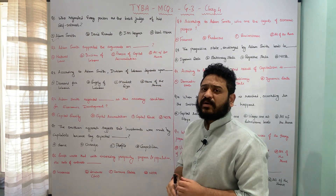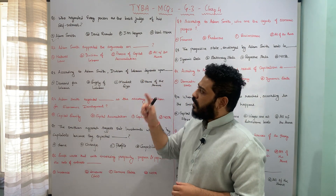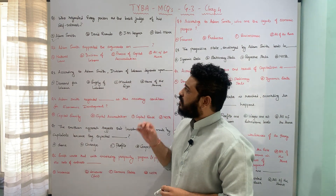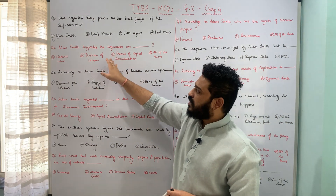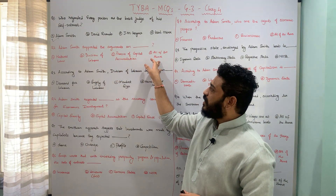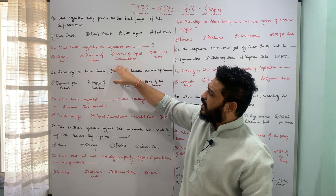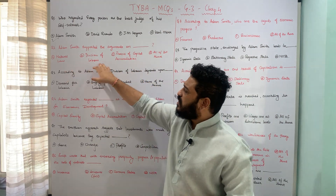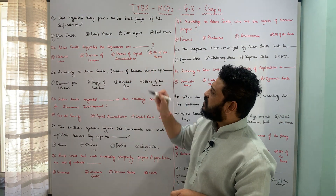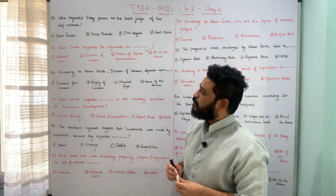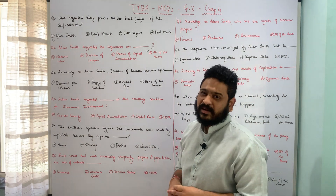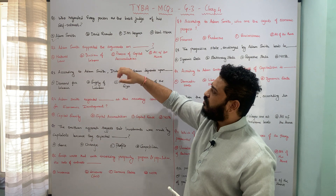The second question: Adam Smith supported the arguments on dash — whether A natural law, B division of labor, C process of capital accumulation, or D all of the above. It was all three important arguments which Adam Smith supported, and therefore option D, all of the above, is the correct answer. Adam Smith supported arguments on natural law, the process of capital accumulation, as well as division of labor.